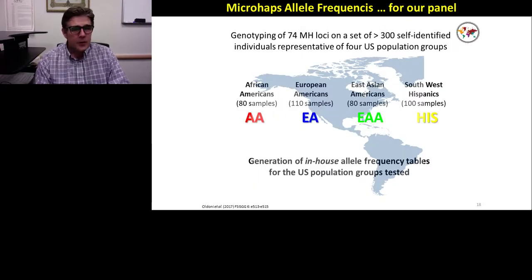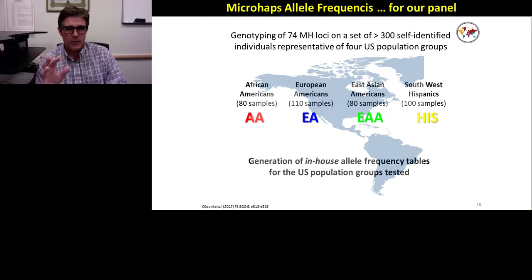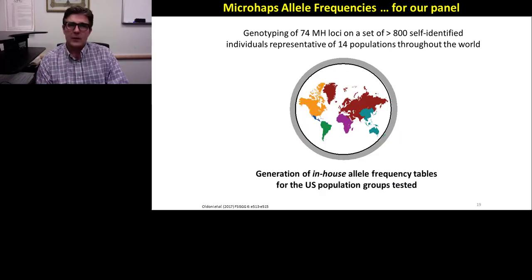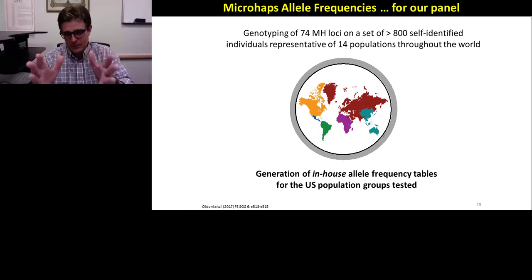For allele frequencies, we have sequenced samples representing major U.S. populations: African American, European American, East Asian American, and Southwest Hispanic. We have also typed over 800 samples across 14 different populations throughout the world. These allele frequencies are already available for the 74 microhaplotypes we have analyzed.